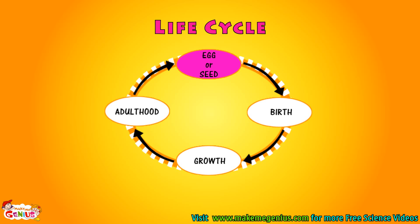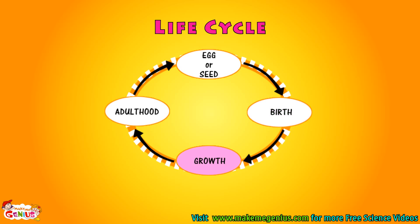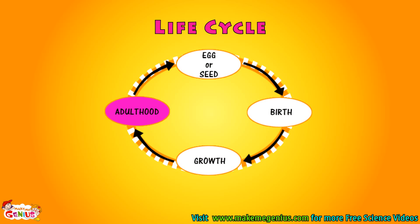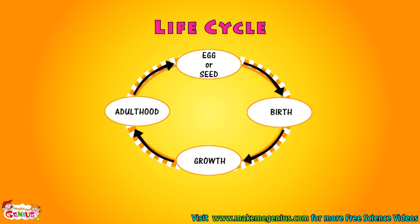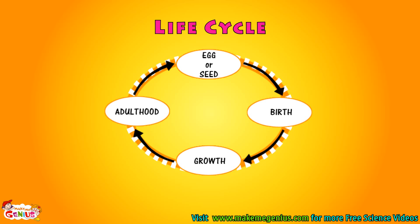It starts from an egg or seed. They take birth, they grow up, then they become adults, and they reproduce at this stage. When a plant or animal reaches young age, they can make babies.